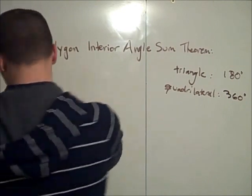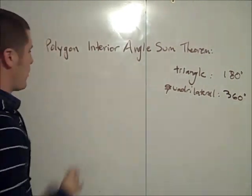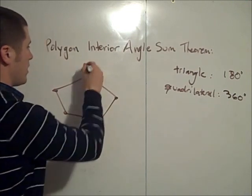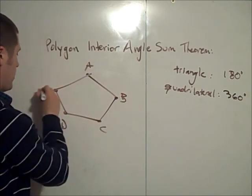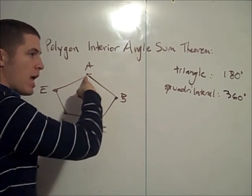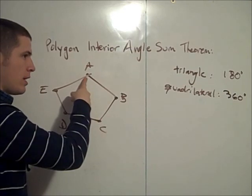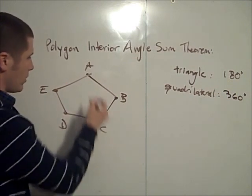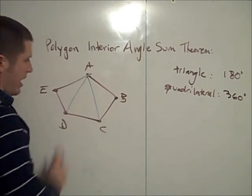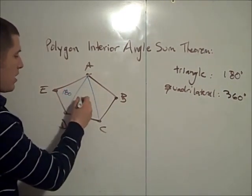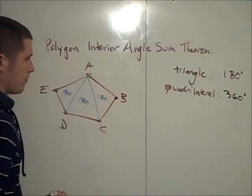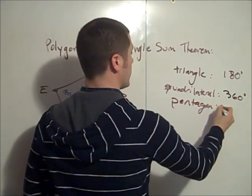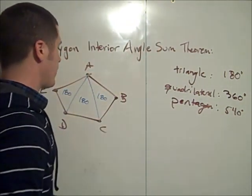Let's look at one more before we make our conjecture and notice our pattern. Let's look at a pentagon — here's our pentagon, A, B, C, D, E. Looking at vertex A, there are two non-adjacent vertices this time: C and D. So we draw in those diagonals, and we have a similar situation. We have 180 degrees in this triangle, 180 degrees in this triangle, and 180 degrees in this triangle. So for a pentagon, there are going to be 540 degrees as the interior angle sum.